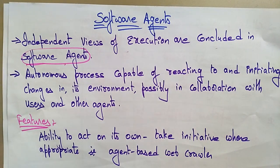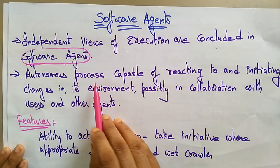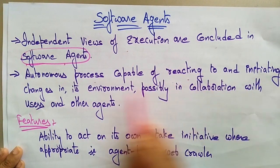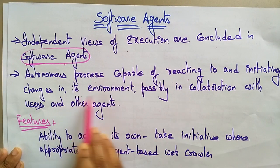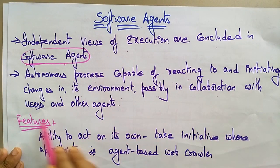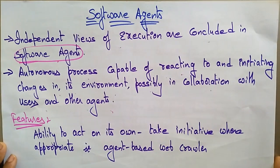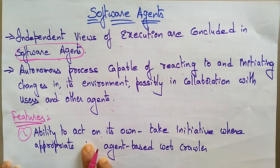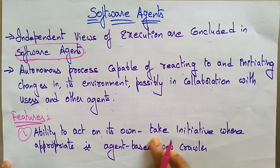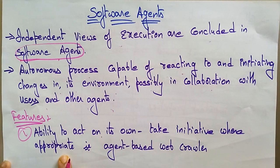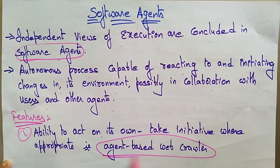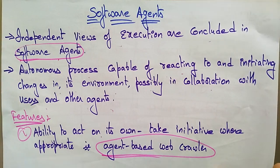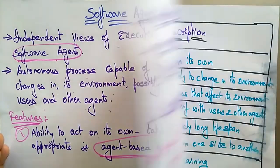A software agent is an autonomous process capable of reacting to and initiating changes in its environment, possibly in collaboration with users and other agents. One key feature is its ability to act on its own and take initiative where appropriate. An example of this is an agent-based web crawler, which acts on its own and takes initiative whenever required.